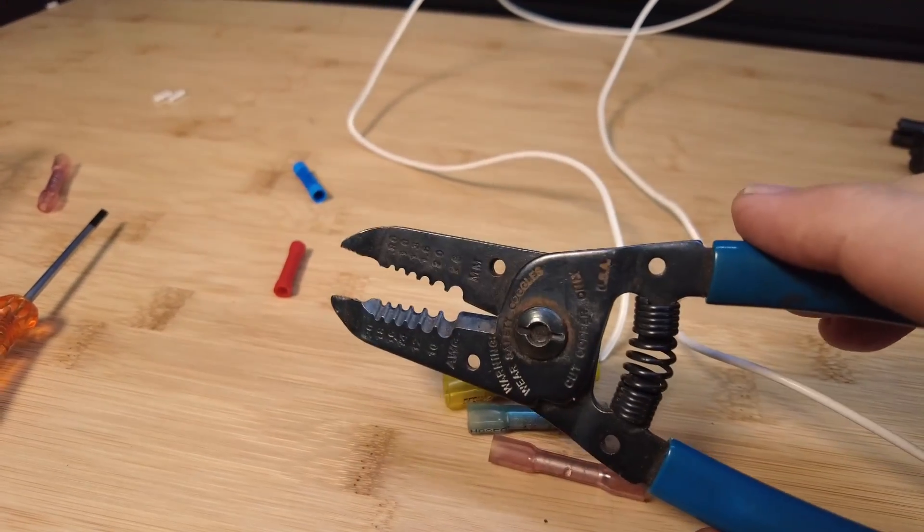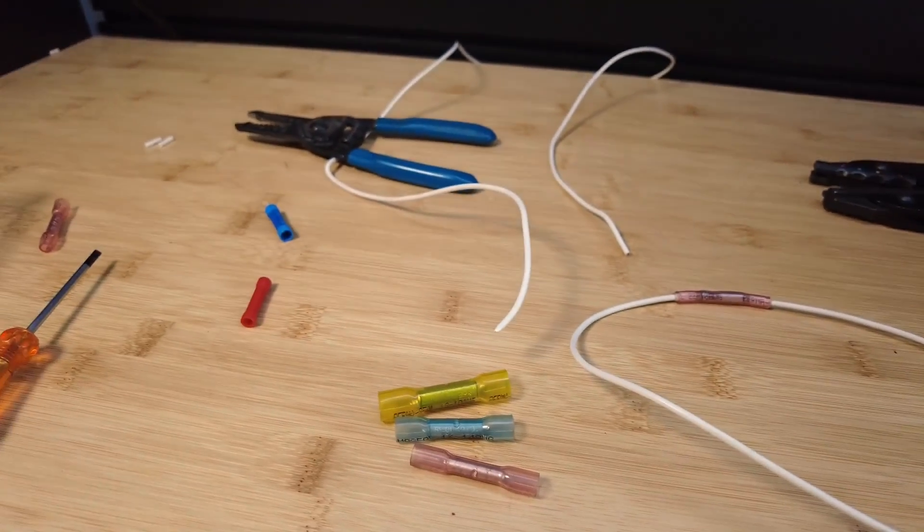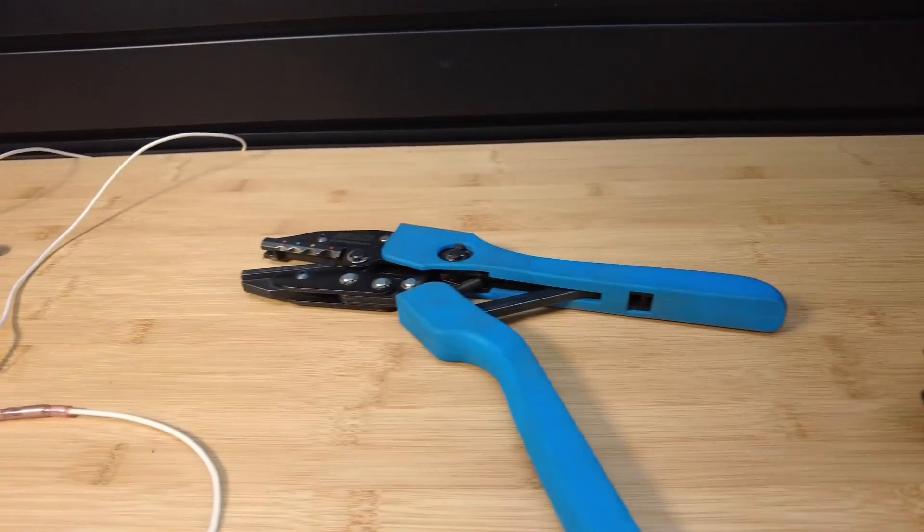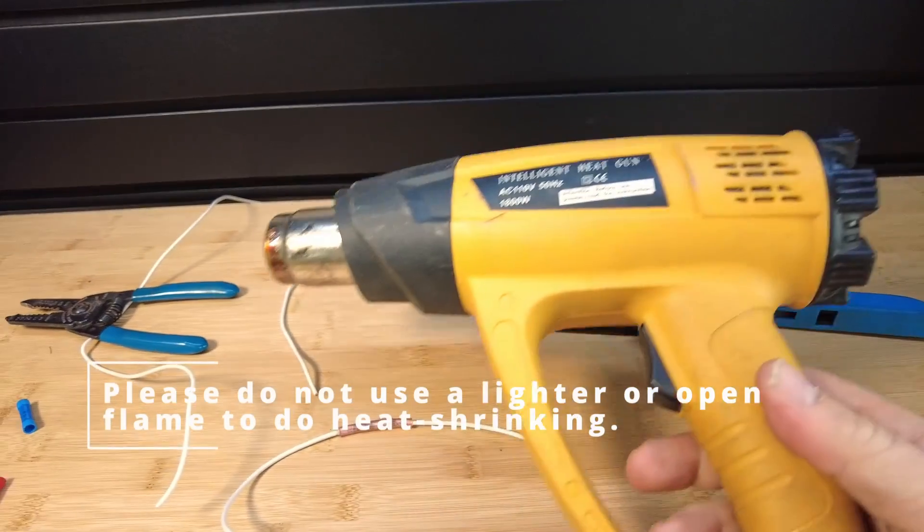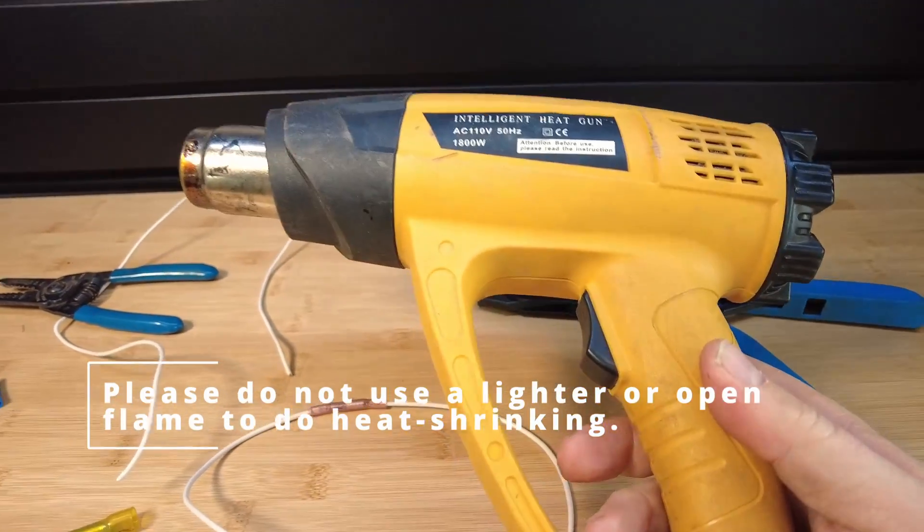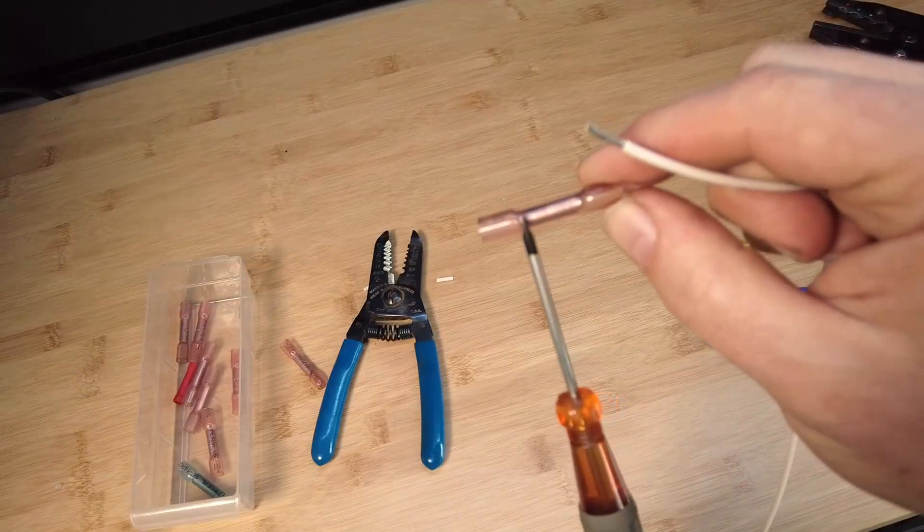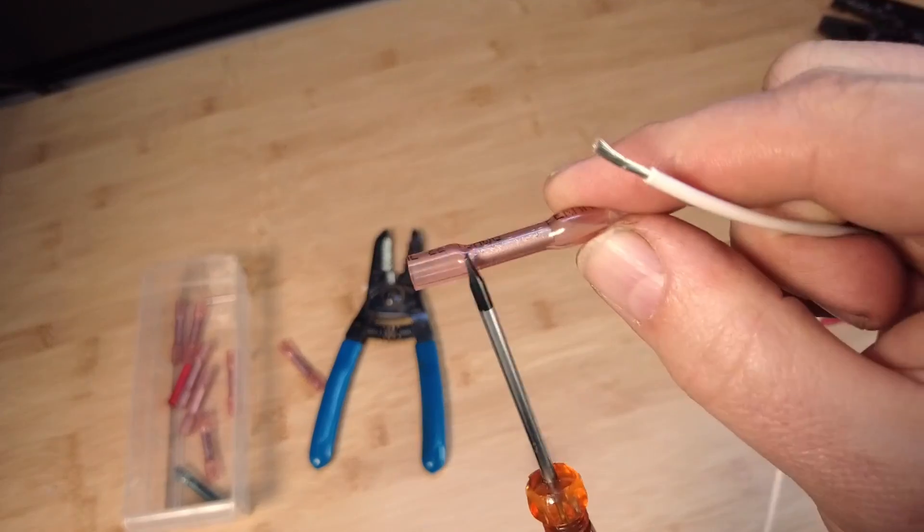We also need a good quality wire stripper, a nice, good quality, sharp wire stripper. And we will need the crimpers that we just showed you. And we will need a heat gun. It doesn't have to be anything special, just a decent quality heat gun.